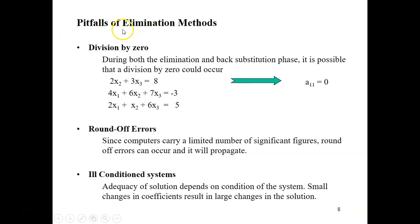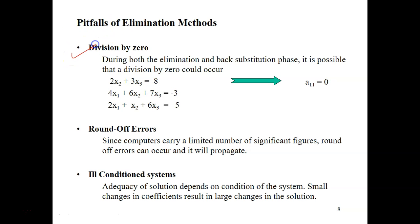In this video I'm going to talk about pitfalls of elimination methods. These pitfalls can happen both in Naive Gauss and Gauss-Jordan. The first one is division by zero, then we have round-off errors, and then ill-conditioned systems. These three pitfalls are worth noting.